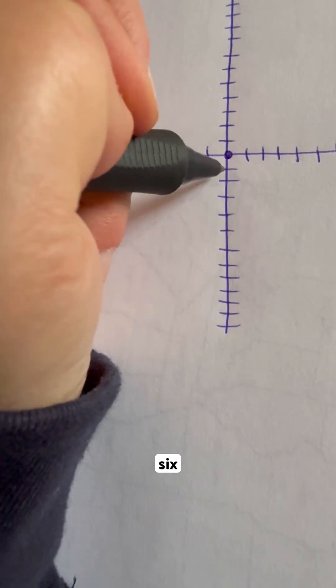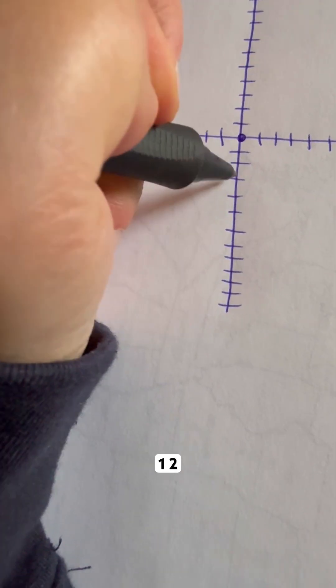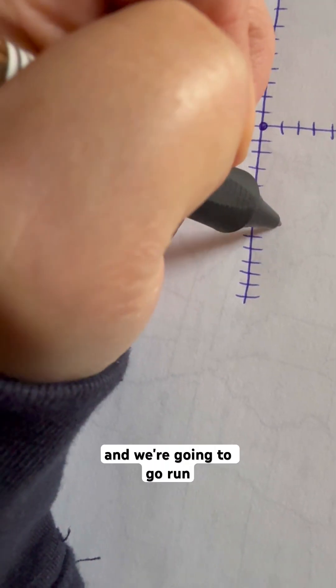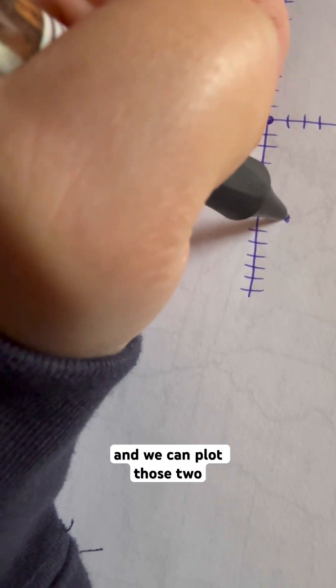So we're going to go down 6 from this point that I made. 1, 2, 3, 4, 5, 6. And we're going to go run over 1. And we can plot those two points, connect them, and call it a day.